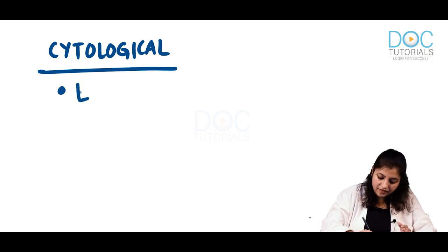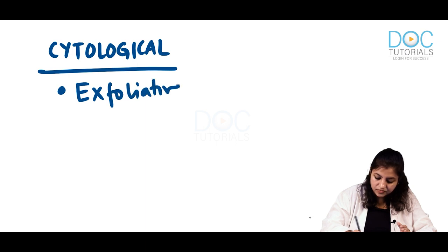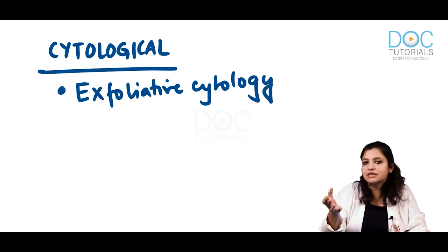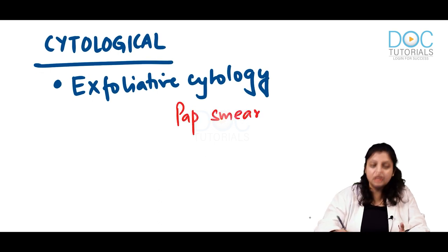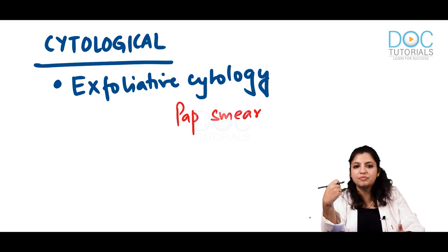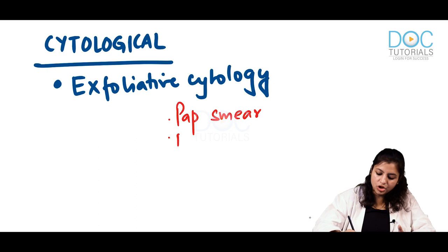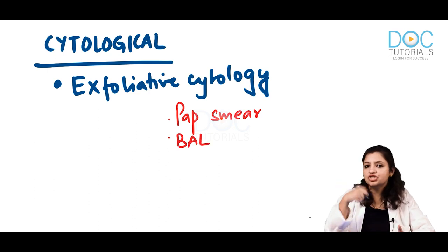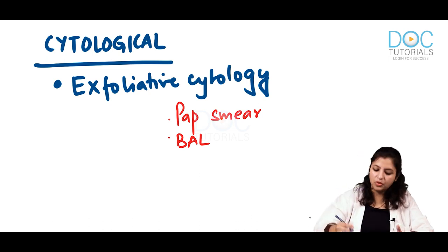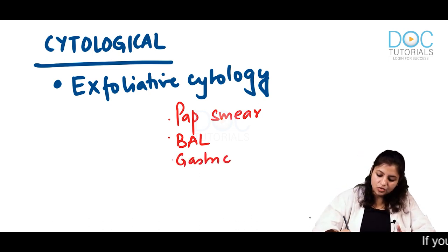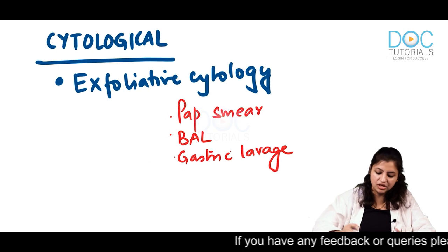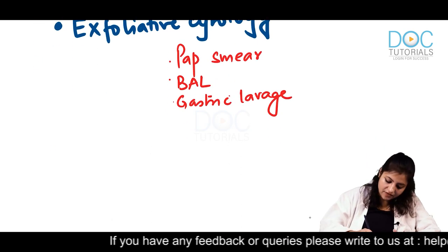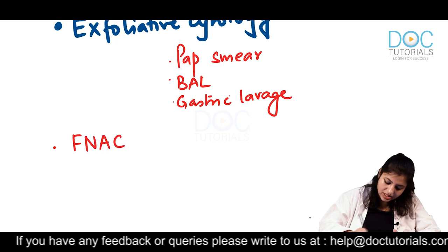Number one, we can have a technique called exfoliative cytology. Exfoliative cytology means where you collect the shed cells — cells getting shed in the secretion. You take them like a pap smear, where you take cells shed from the squamocolumnar junction by scraping. Or bronchioalveolar lavage, where you rinse and collect shed cells, or gastric lavage — same principle. All these are exfoliative cytology.